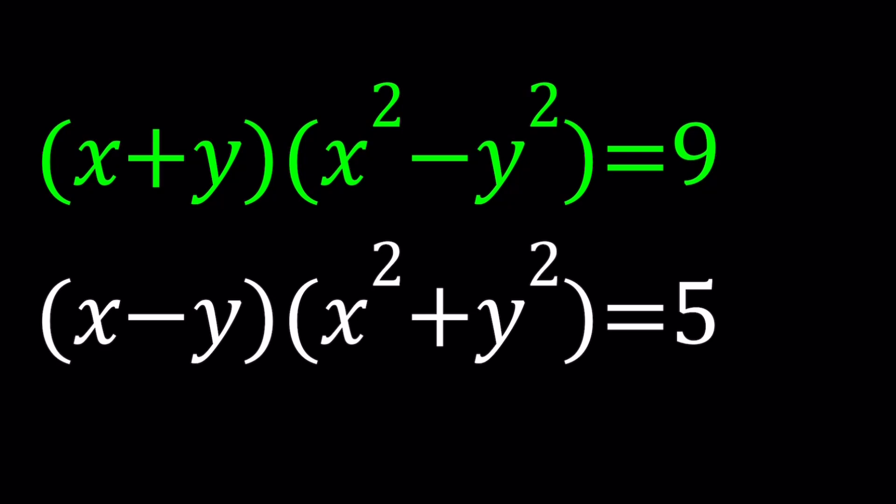We have x plus y multiplied by x squared minus y squared equals 9, and x minus y multiplied by x squared plus y squared is equal to 5. So the plus with the minus, minus with the plus, the linear with the quadratic, so on and so forth. So there is some kind of pattern here, isn't there?